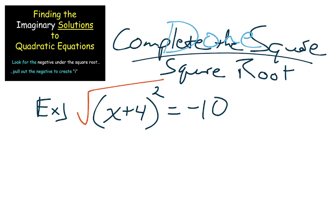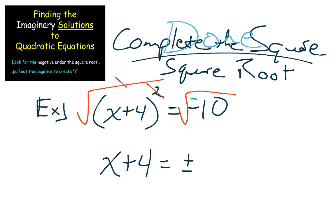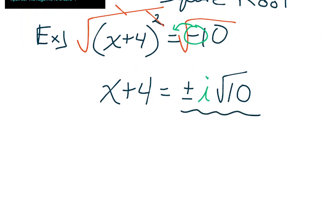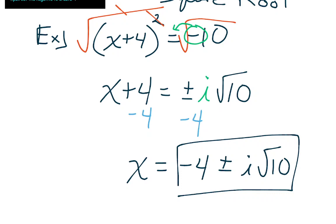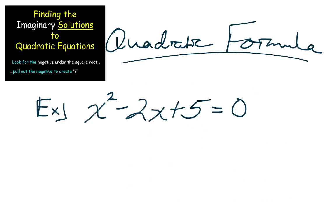Some problems don't fit neatly under a certain heading — we just need to recognize we can take the square root of both sides directly. That square cancels leaving x plus 4, and we have the square root of a negative number on the other side — no big deal, that always produces an i, leaving plus or minus i root 10. Is there a perfect number inside 10? No, so we leave it as root 10. Subtract 4 from both sides: the answer is negative 4 plus or minus i root 10 — a complex number with a real part and an imaginary part.